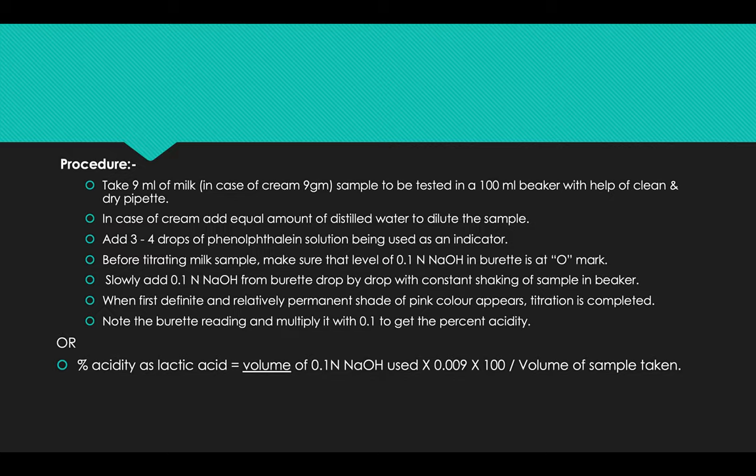When first definite and relatively permanent shade of pink color appears, saturation is complete. Note the burette reading and multiply it with 0.1 to get the percent acidity. To calculate percent acidity as lactic acid, volume of sodium hydroxide used is multiplied by 0.009, multiply by 100, and whole is divided by volume of the sample taken.